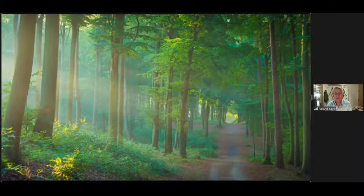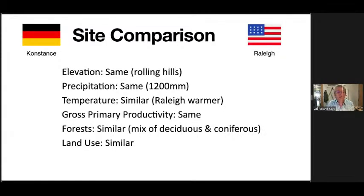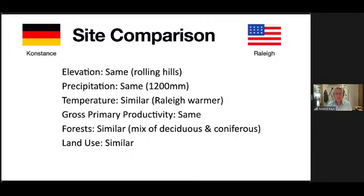My hypothesis is that the more sustained and intensive hunting pressure in Germany will result in hunted species being less abundant and more fearful of humans than those in North Carolina. We're working in southern Germany, which is similar to Raleigh — similar elevation, almost identical rainfall, similar temperature. Gross primary productivity, a measure of how much plant productivity an area has, is basically the same. Both regions have a mix of deciduous and coniferous forest.